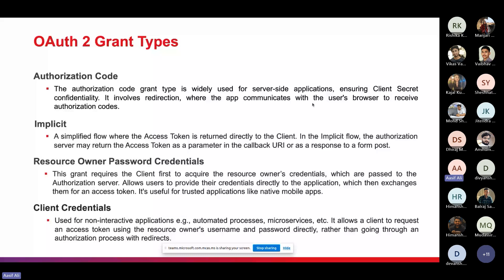The fourth grant type is Client Credentials, used for non-interactive applications like automated processes and microservices. It allows a client to request an access token using its own credentials directly, rather than going through an authorization process with redirects.